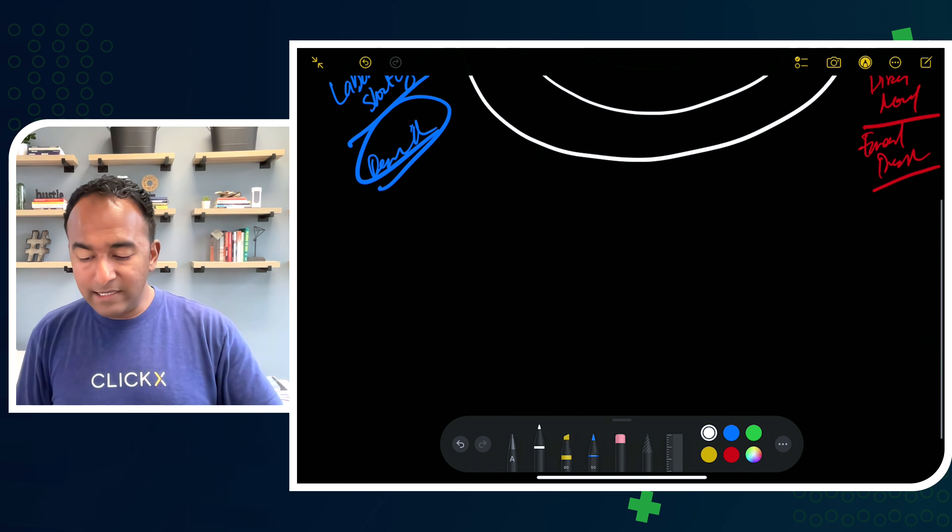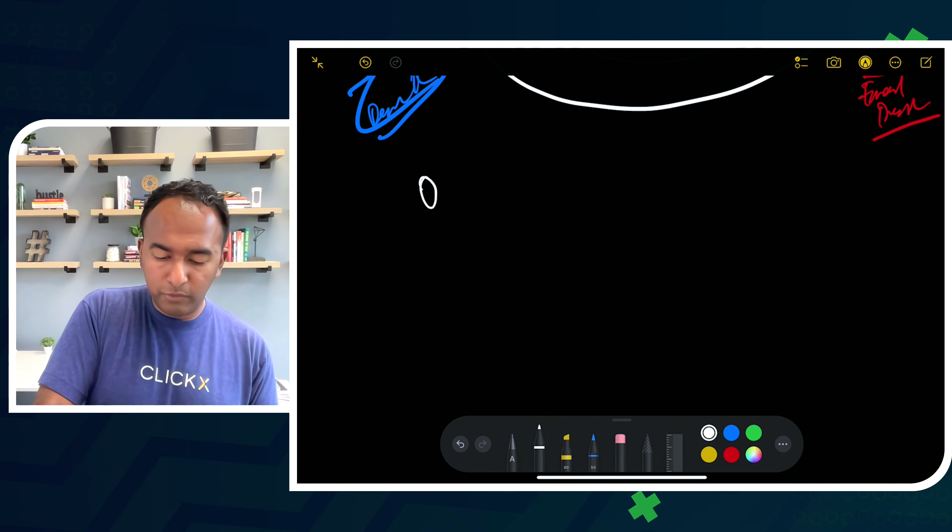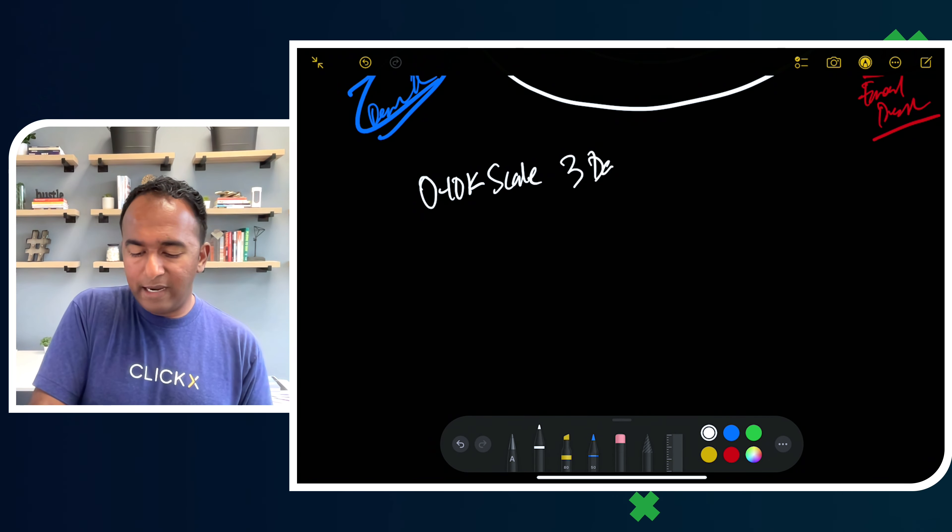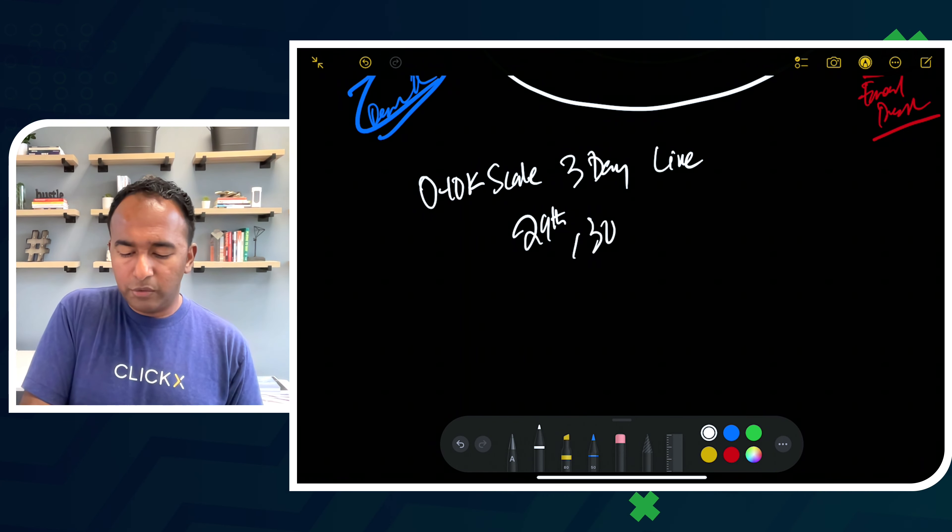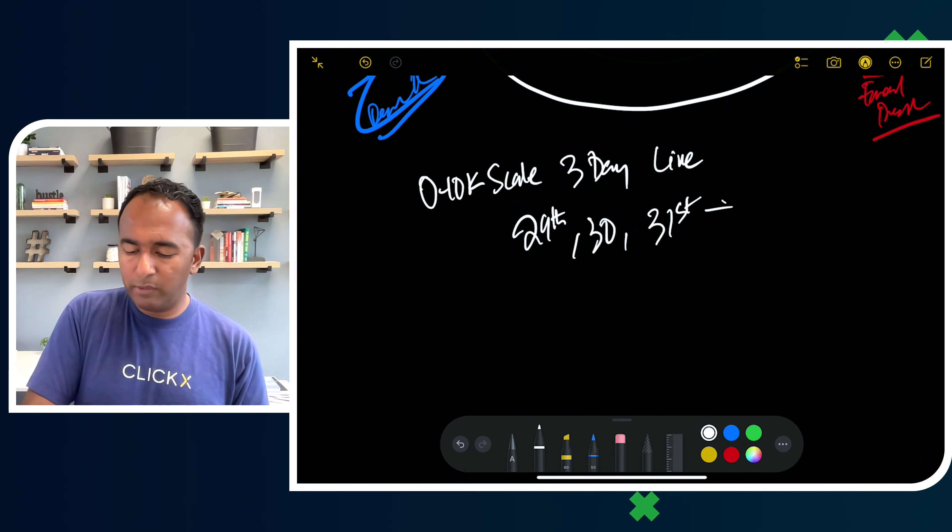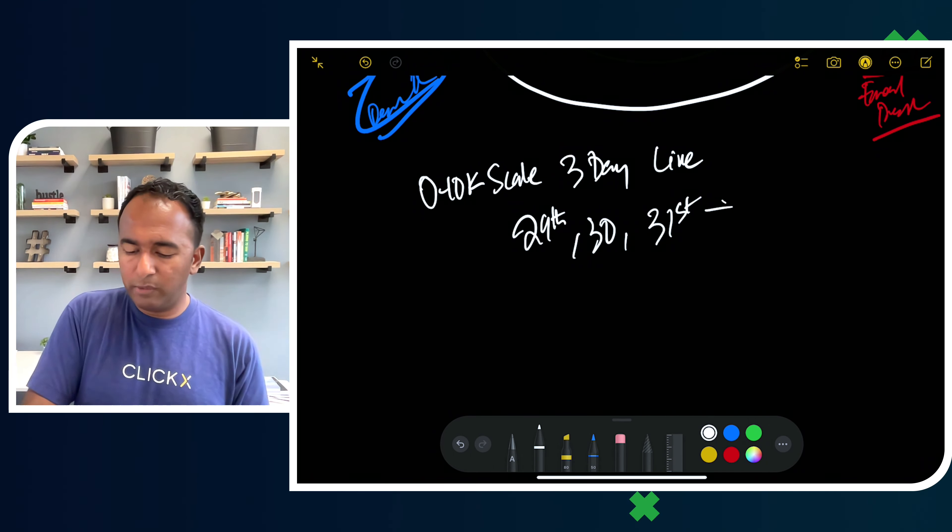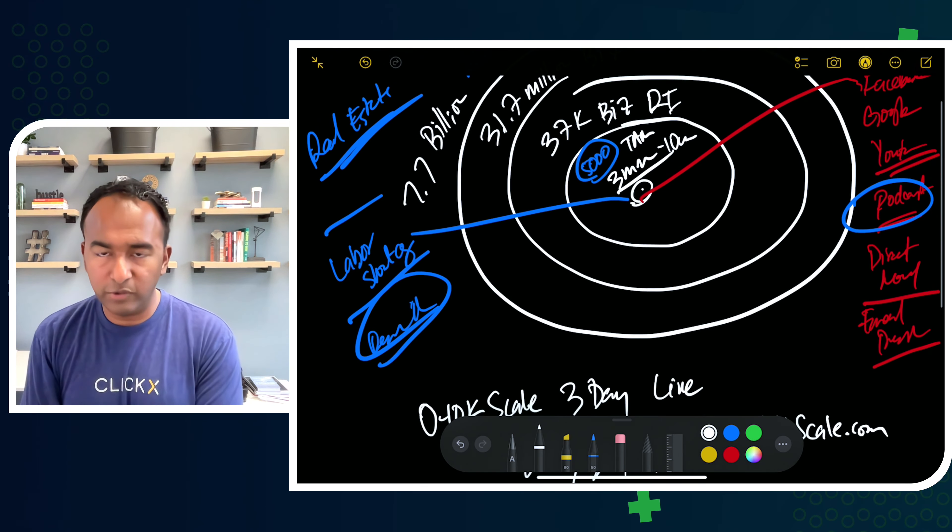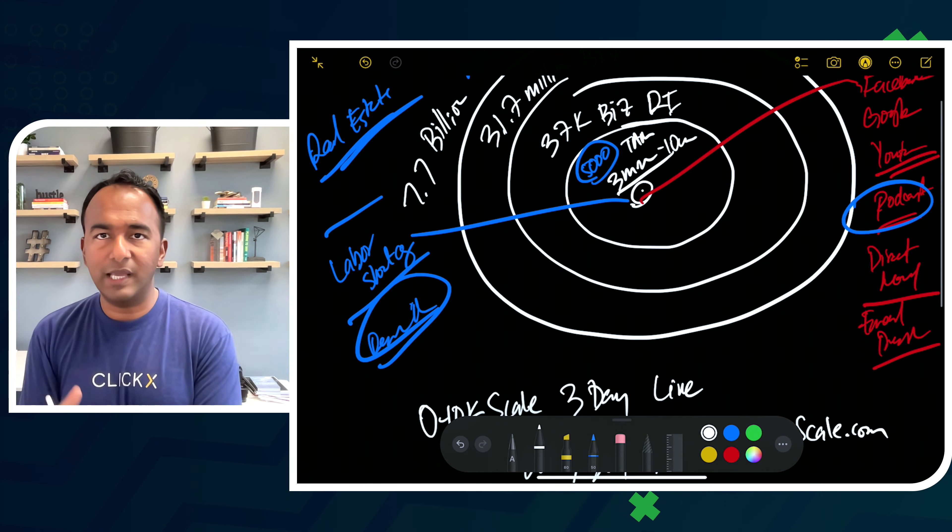If you don't know, at the end of this month we're doing a couple things. Zero to 10K Scale, it's a three-day live training. When is this happening? It's on the 29th of August, 30th and 31st. I need you to register. How do I register? Go to 10kscale.com. I will put it right below this video. See, this training is going to go way more deeper than what I just illustrated for you right here, way more deeper about passion, skills and all the things that you could be thinking about.